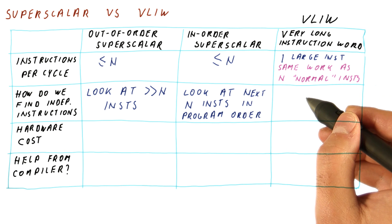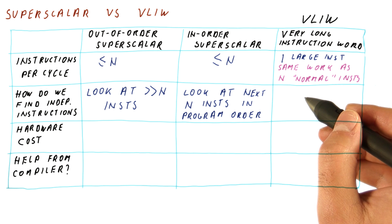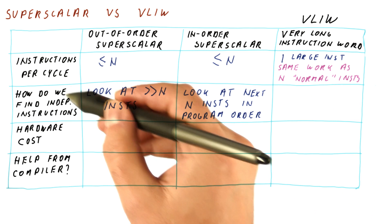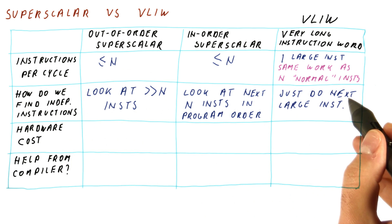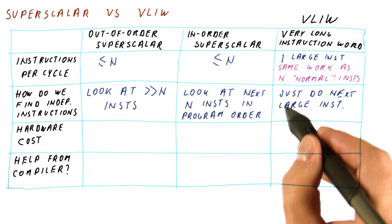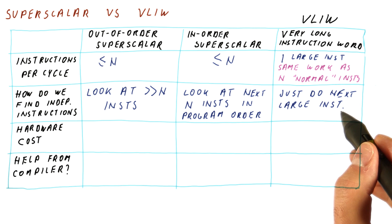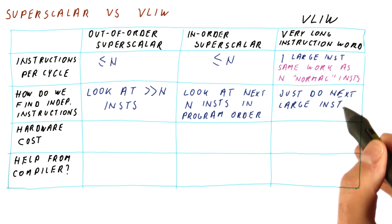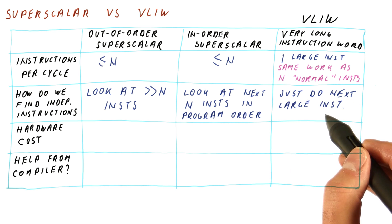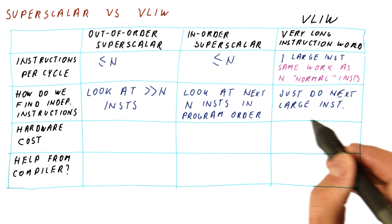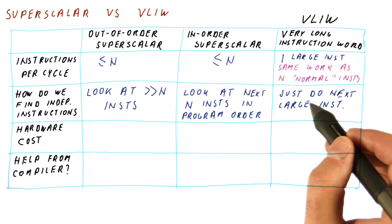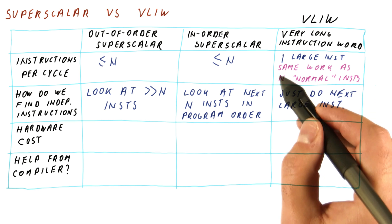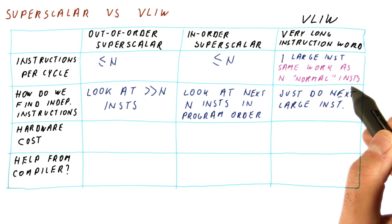A VLIW processor doesn't even try to find independent instructions. It simply tries to do the next large instruction, behaving like a non-superscalar processor that executes instructions in order. It's just that each of these instructions is really describing a lot of work.